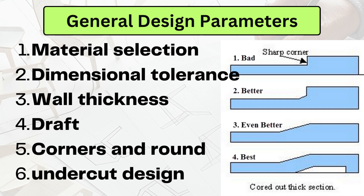Wall thickness is also very important. We need a proper wall thickness — not too thin and not too thick — because a thin wall may not be strong enough to support the required load, while a too-thick wall may cause warping or shrink marks. So we need to select the nominal wall thickness.